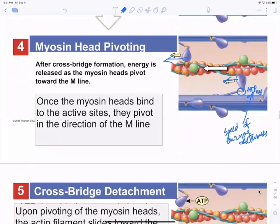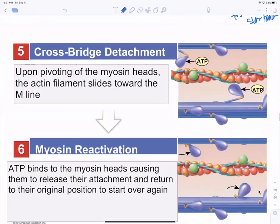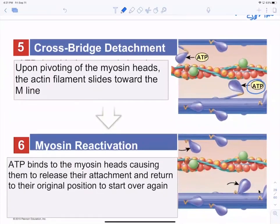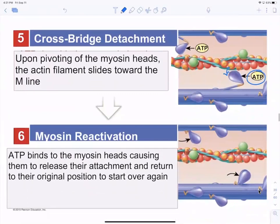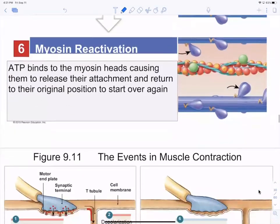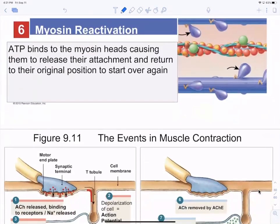Fast myosin ATPase means fast twitch — the myosin head pivots faster, and those muscle fibers slide faster. Upon pivoting, a second ATP must bind to allow the myosin head to release. The head then hydrolyzes this ATP, reconfigures itself, re-energizes, and starts the crossbridge cycle over again.